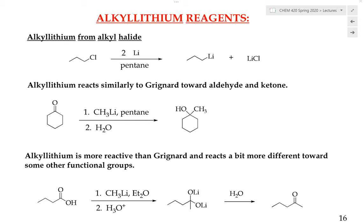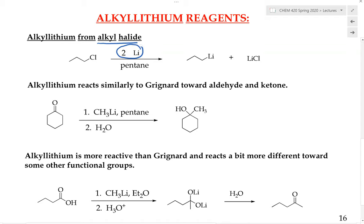First let's go over the preparation of the alkyl lithium reagent. It can be made from the alkyl halide. We can use that alkyl halide to convert it into the alkyl lithium reagent. We would need two equivalents of lithium metal in the presence of pentane as the solvent. This undergoes oxidative addition, very similar to magnesium, where it inserts the metal and gives one electron to the carbon and one electron to the chlorine, effectively breaking the carbon-chlorine bond.